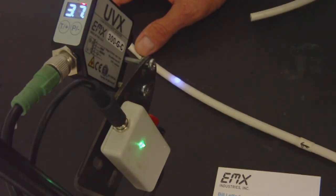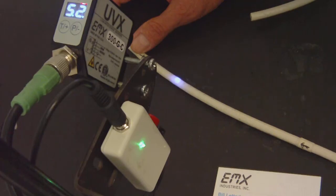So that's the UVX300GC on a luminescent ink printed onto a piece of cabling.